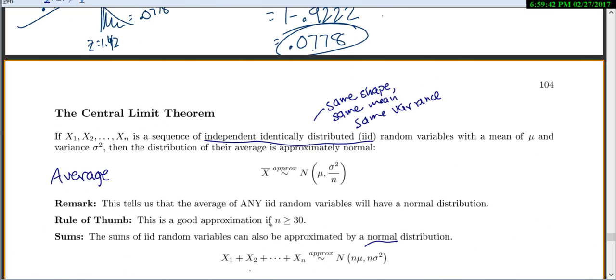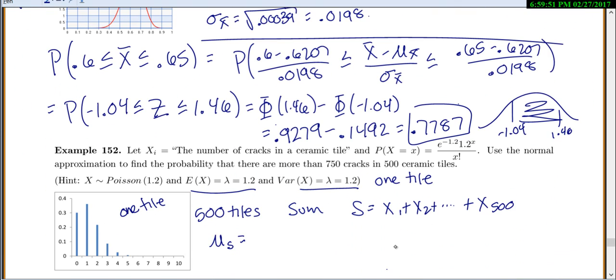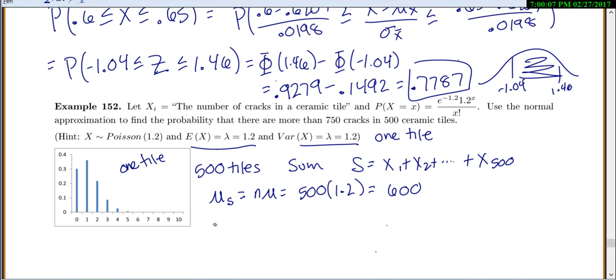We told you some nice formulas. For the sum, your new mean will be n times your old mean, and your variance is n times your old variance. So it'll be n times your old mean, 500 times, so up here expected value, that's mu, 500 times 1.2 equals 600. The variance is supposed to be n times your old variance. So 500 times our old variance, which was also 1.2, gives me 600. Your standard deviation for S is the square root of 600, so 24.5.